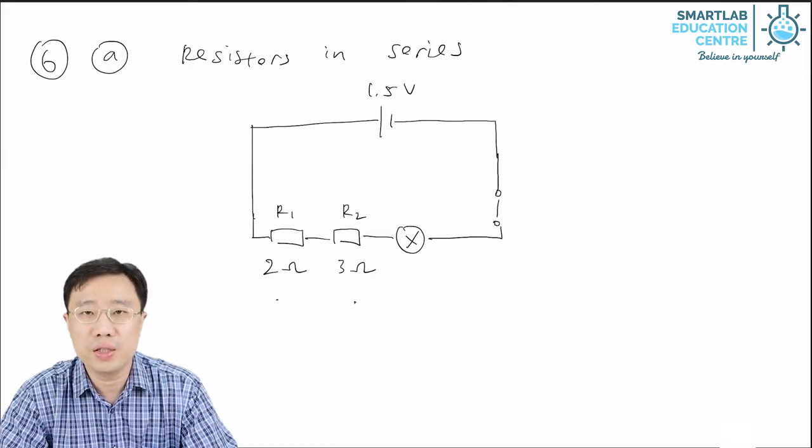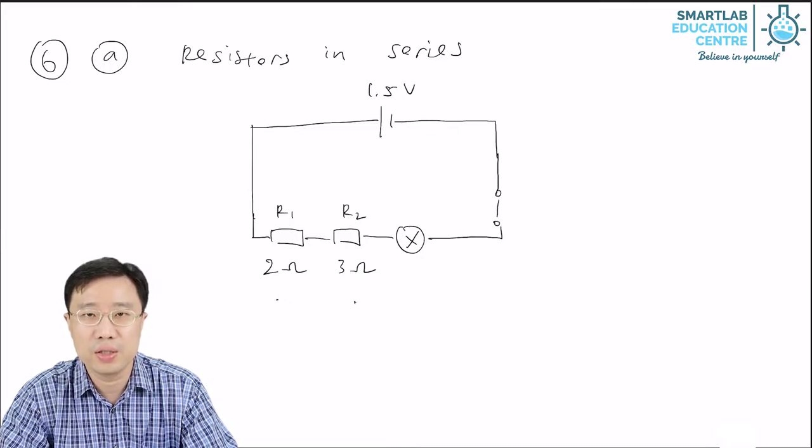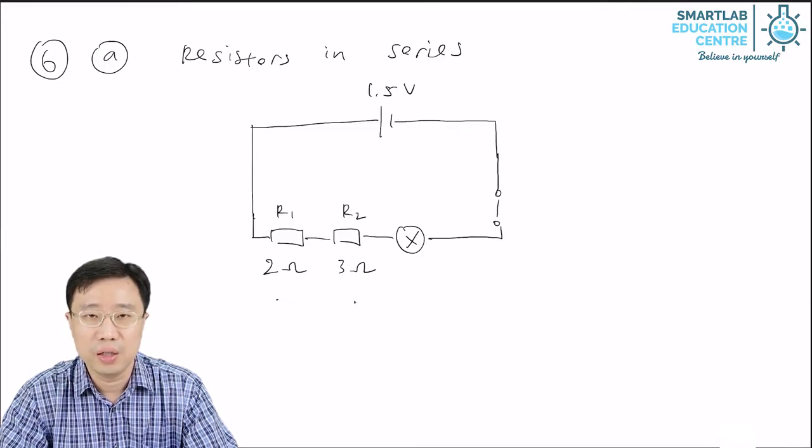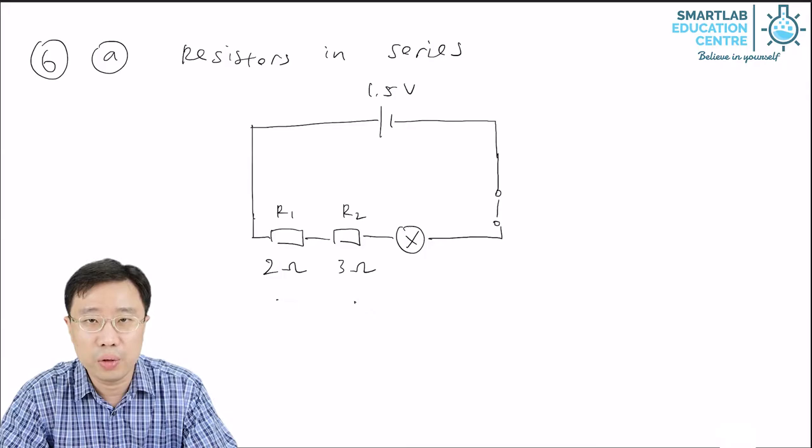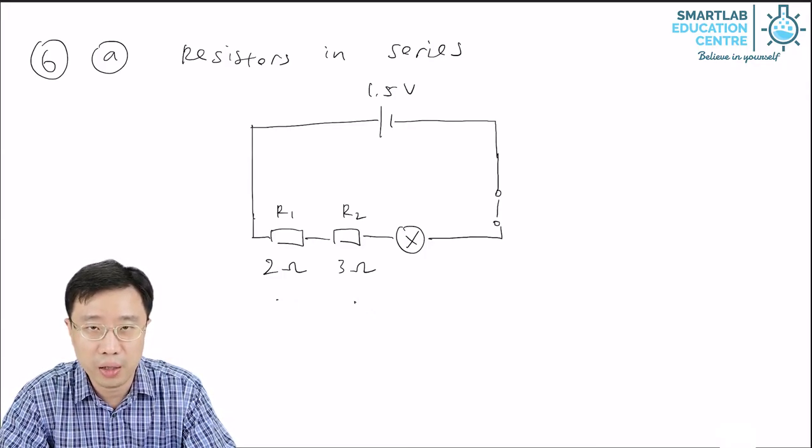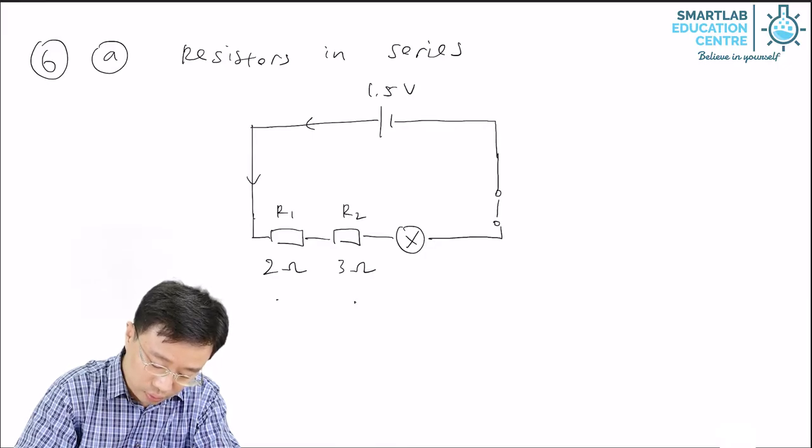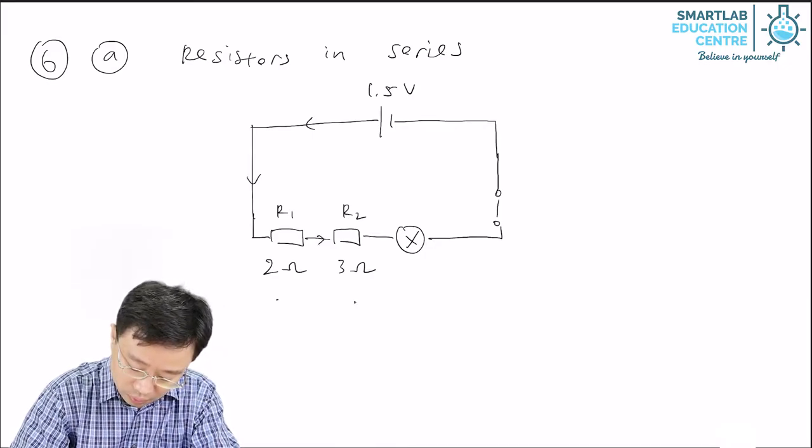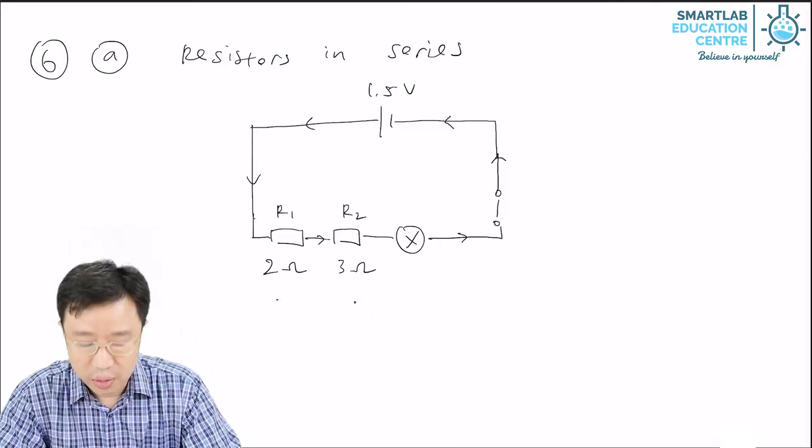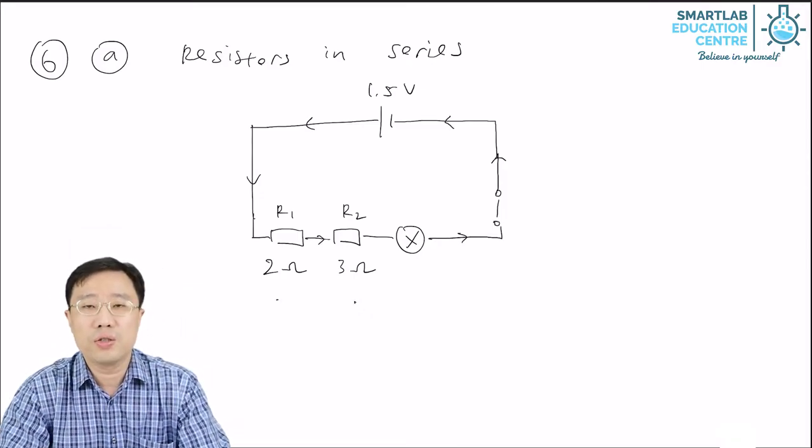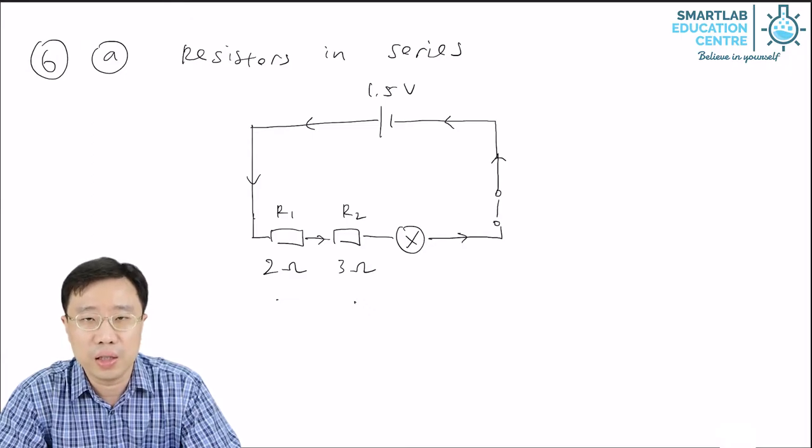So what is the total resistance in this circuit? If you look at the way R1 and R2 are arranged, you see that there is only one single path for current to flow through them. You can see this from the arrows indicating the current flow.